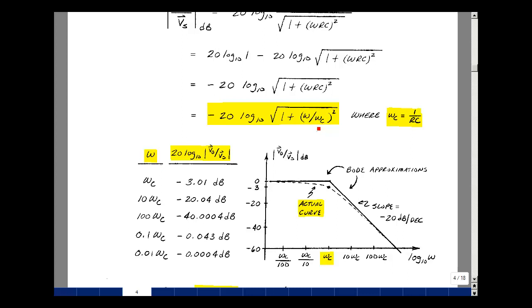I can see in this expression that it depends on the ratio of the actual frequency to a constant. If I pick ω equals ω_c, I have the square root of 2, and 20 log of that is a minus 3.01 dB. If I make ω equal to 10 times ω_c, this becomes just 10 squared plus 1, and 20 log of that is about minus 20.04 dB, and so on for 100 is minus 40, 0.0004 dB, 0.1 minus 0.043 dB, and then 0.01 minus 0.0004 dB.